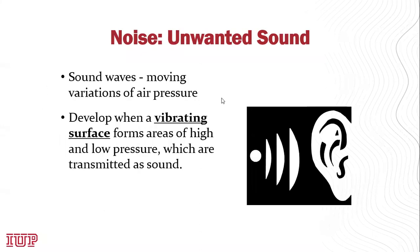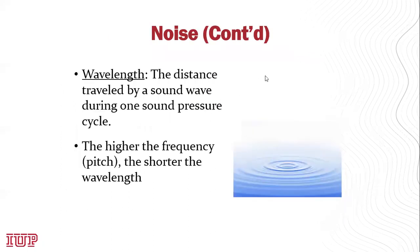The basic definition of noise is unwanted sound. Sound waves are moving variations of air pressure. The waves develop when a vibrating surface forms areas of high and low pressure, and those variations are transmitted as sound through the air. Noise is measured in two different areas: wavelength and amplitude. Wavelength is basically the frequency of noise — by formal definition it's the distance traveled by a sound wave during one sound pressure cycle.